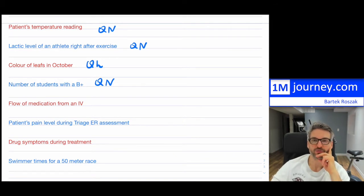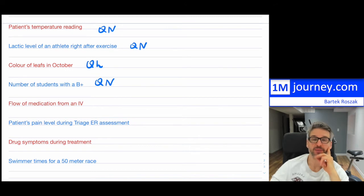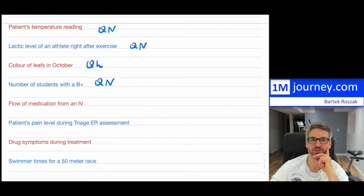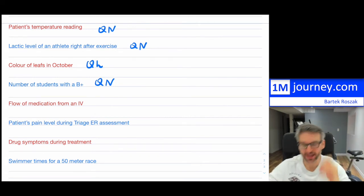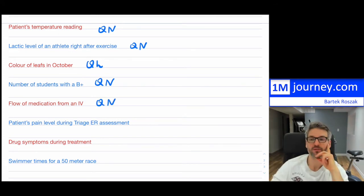Flow of medication from an IV — if you're a patient set up on an IV, the flow would typically be some kind of rate, such as a volume flow rate. That can be measured; you'd have a reading showing how much medication a patient is receiving. So that is another quantitative variable.